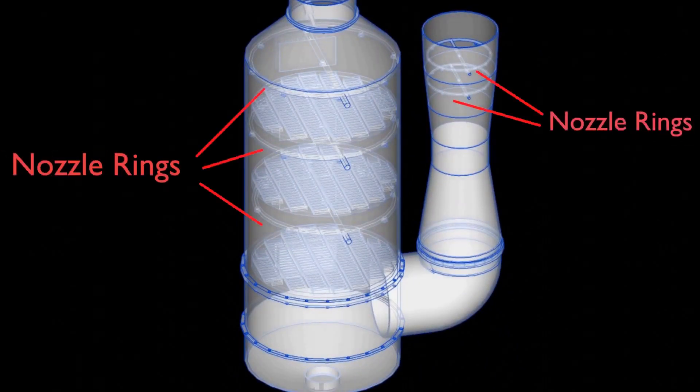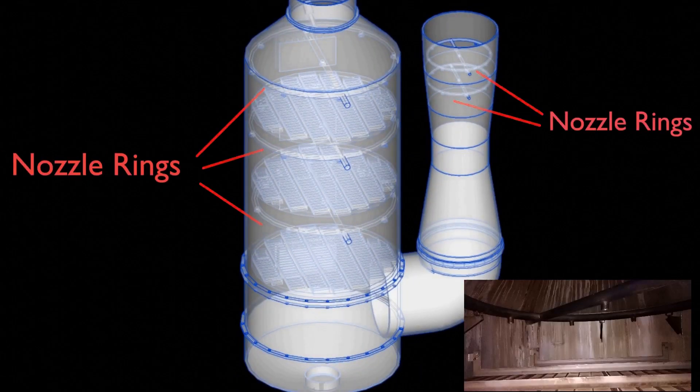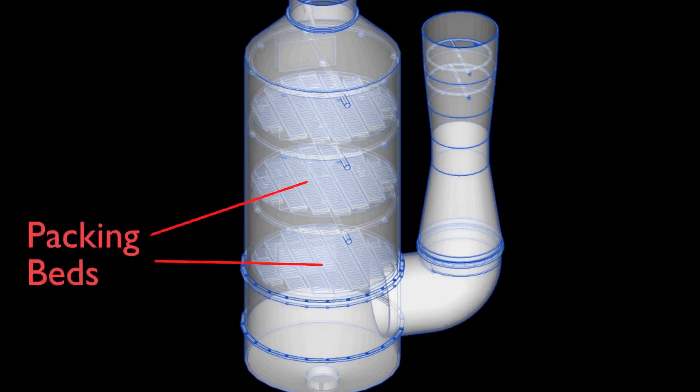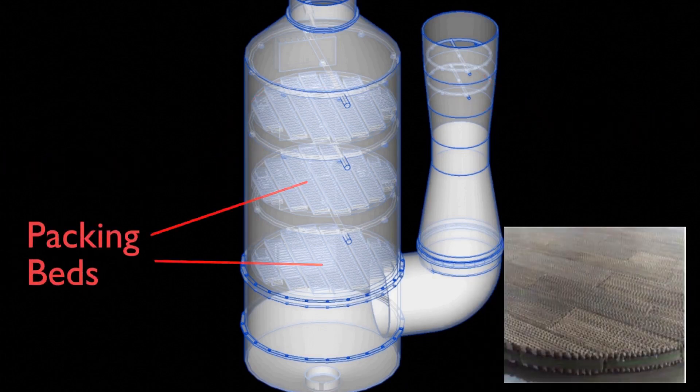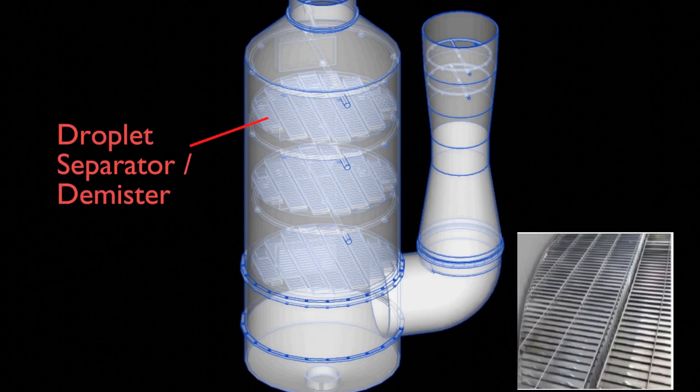Right below the first and second stage of nozzle rings are the packing beds or wet filters. Below the third nozzle ring is the droplet separator that prevents the droplets from being carried away to the atmosphere.